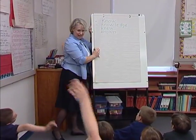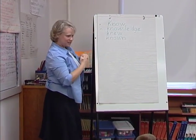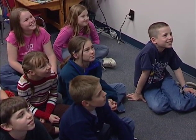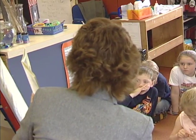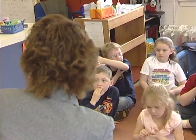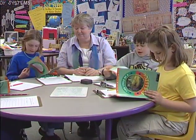Children should receive explicit instruction in four types of word learning, which include learning words that are synonyms for known words, learning words that have multiple meanings, learning words that represent new and complex concepts, and clarifying and enriching the meaning of known words. In addition to direct instruction of vocabulary, you can help your students learn unfamiliar words independently by modeling and teaching word learning strategies.